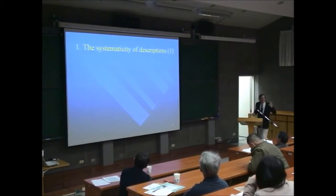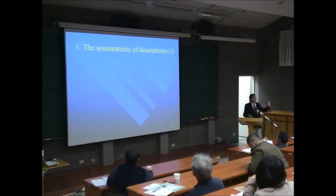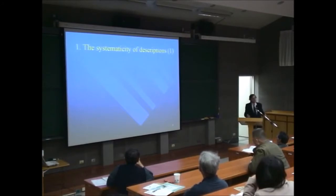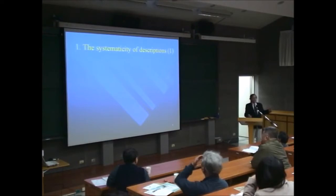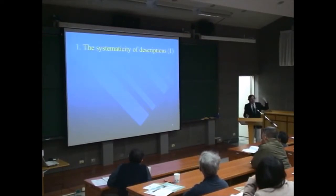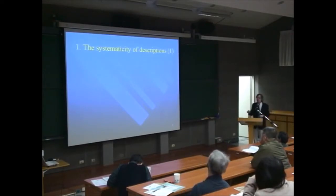Let me now discuss the nine dimensions. That's the program for the next steps. I'm going through these different dimensions — descriptions, explanations, and so on — all nine of them. I'll give you examples of the higher degree of systematicity of the sciences in the wide sense, including humanities, and make a few remarks.